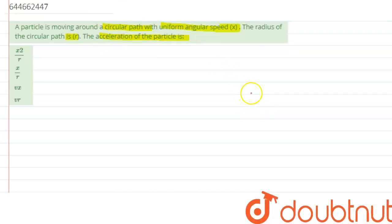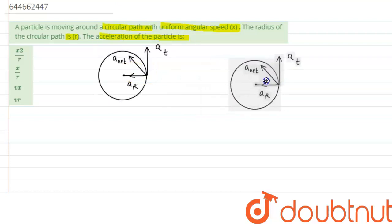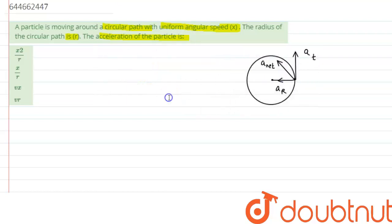So we know when the body is performing circular motion, there are two types of acceleration acting on the body. As we can see over here, the two accelerations are: one is tangential acceleration acting along the tangent, and one is the radial acceleration acting along the radius.